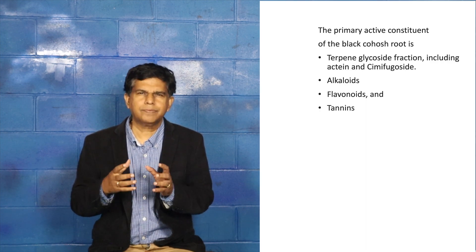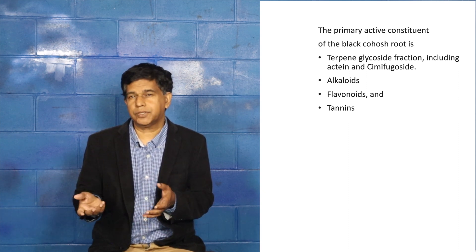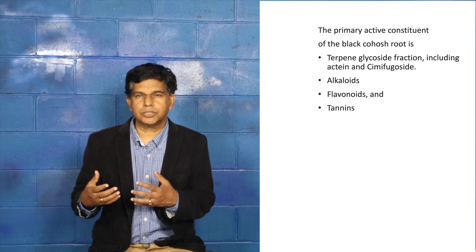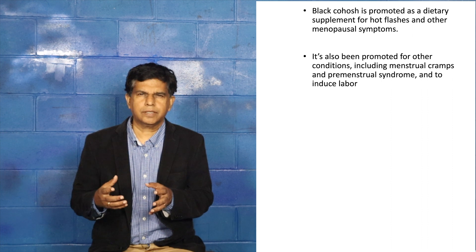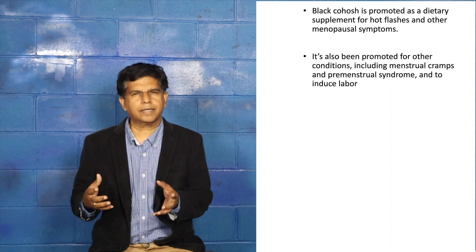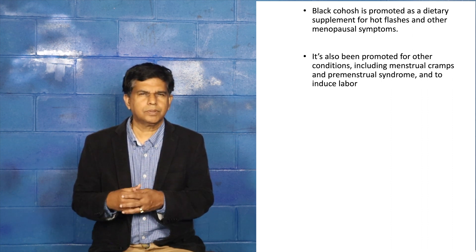Now, what are the scientific components in this black cohosh drug? We got terpene glycoside, alkaloids, flavonoids, and tannins. These are the ones mainly causing the effects for this drug. What do people use it for? Mainly for gynecological conditions, like premenopausal symptoms. Native Americans used it for all the gynecological conditions, even for inducing labor.